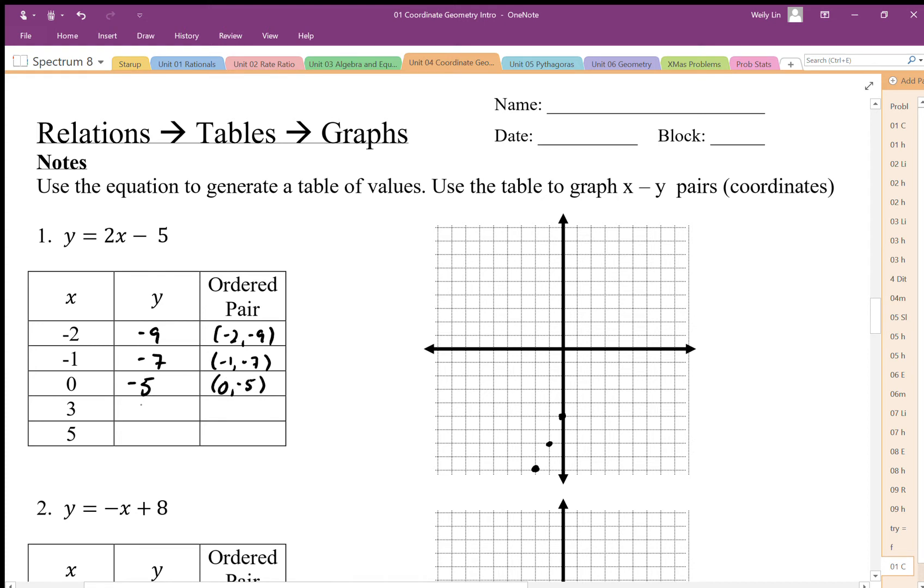Three is going to give us 1. I can see my points are starting to line up in a straight line. Five I get 5, so 5 over, 5 up. I can see that my points are lining up in a straight line, so I know I've done this correctly.